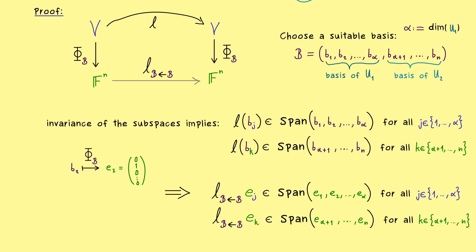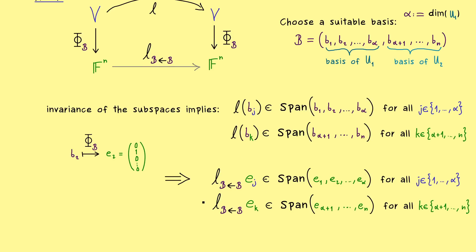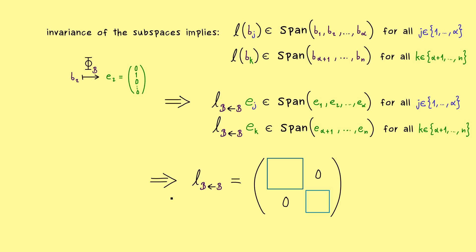To finish, we do the same thing for the other basis vectors and see we have zeros on the top for those canonical unit vectors. With that we can write down our block matrix representation. The first α columns are described by our first element relation, so that square has size α × α. The second element relation describes the second square of size (n − α). By definition α is the dimension of the first subspace and n − α the dimension of the other, which finishes the proof.